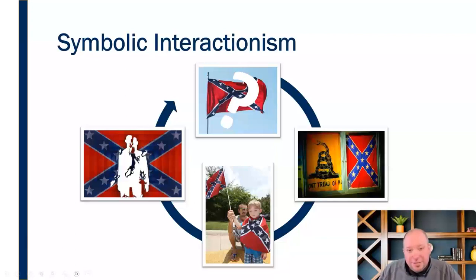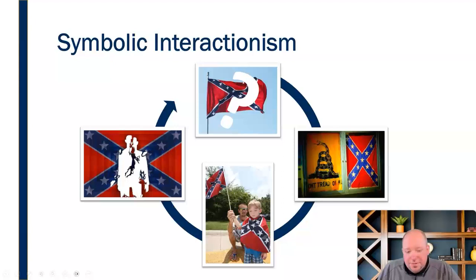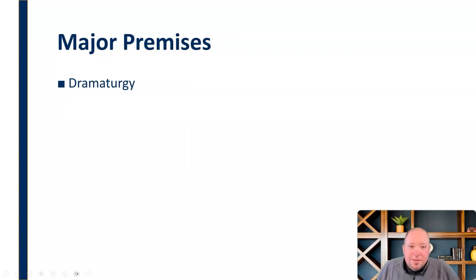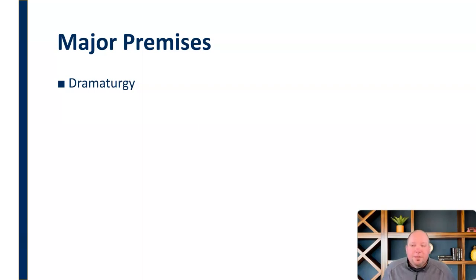Sociological analysis is really grounded in symbolic interactionism — that connection we all have to seeing different symbols and interpreting them individually, while also sharing that connection through social constructs, which causes our interpretation to change over time, incrementally or all at once. Now let's look at the major premises of sociological analysis. The first is dramaturgy, which for our purposes we'll call impression management.